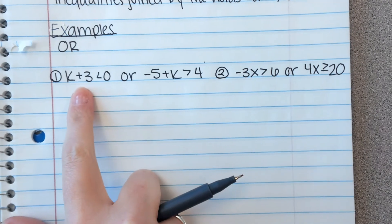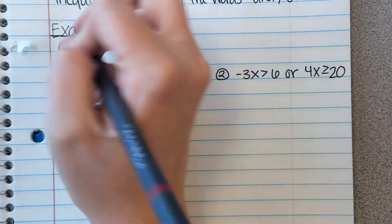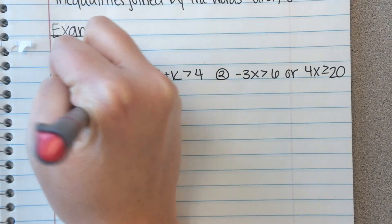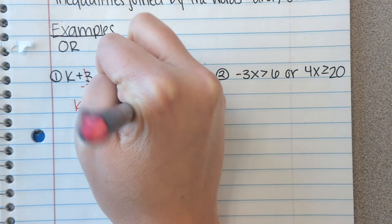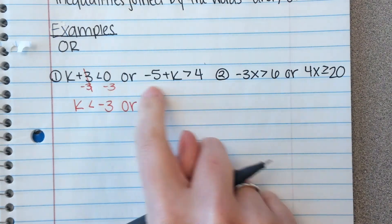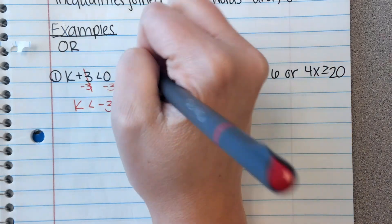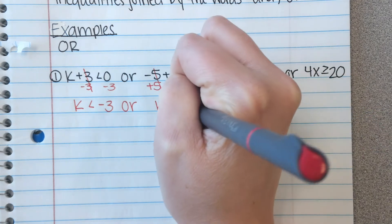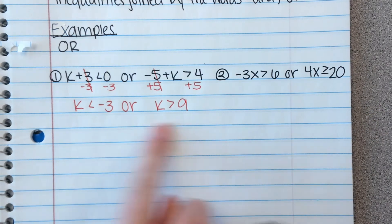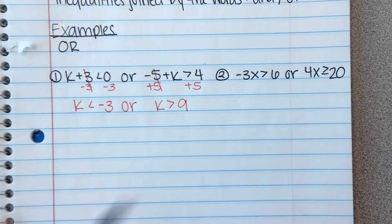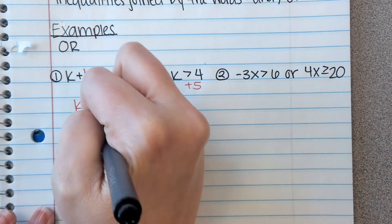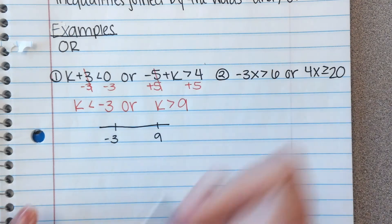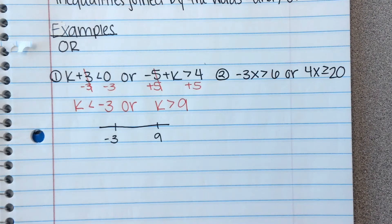Number one: let's solve the first inequality. K plus three is less than zero. Subtract three from both sides and we get K is less than negative three. Or, let's solve the other one. We add five to both sides and get K is greater than nine. So there are two solution sets. In Math Excel, your number lines are going to be made for you and it might even be multiple choice in there.